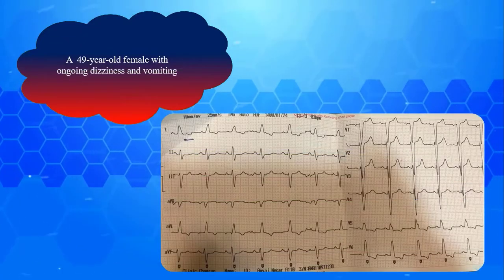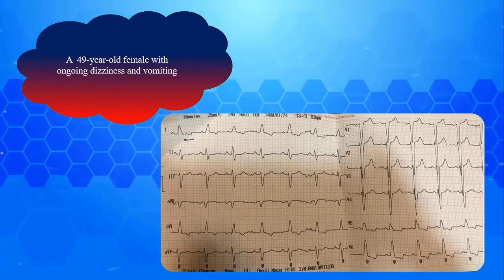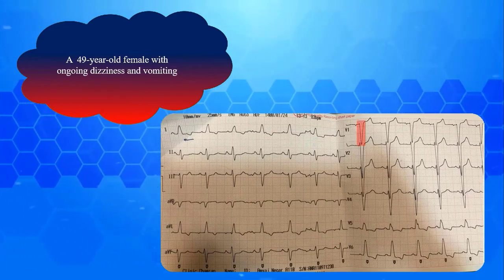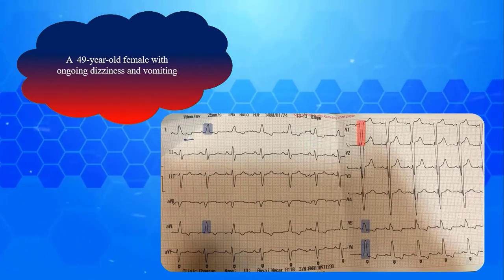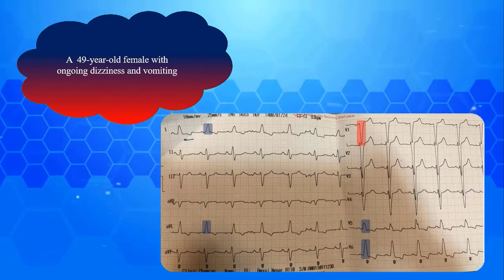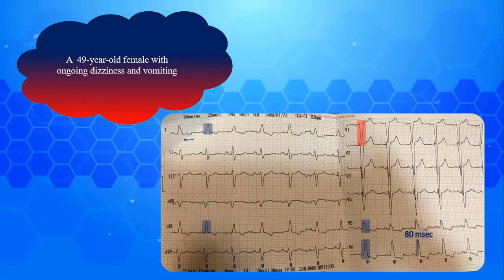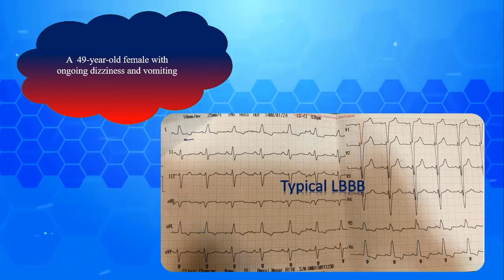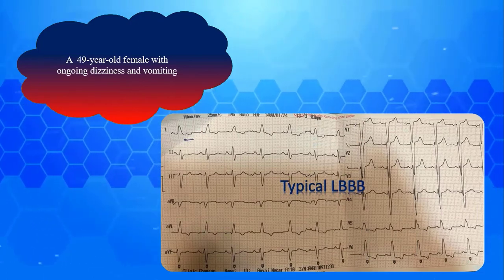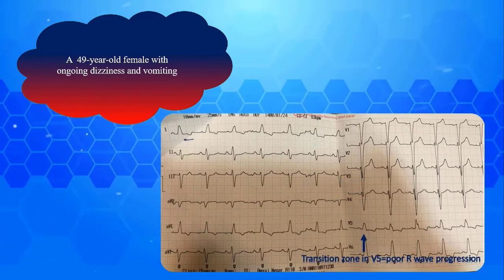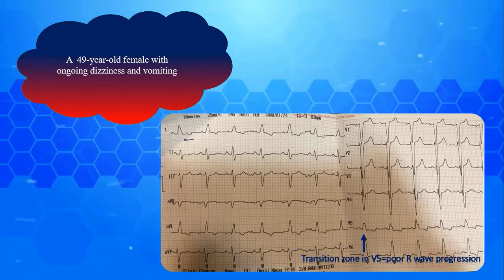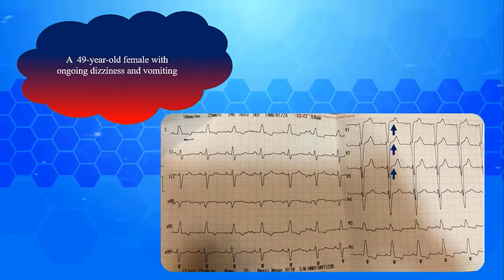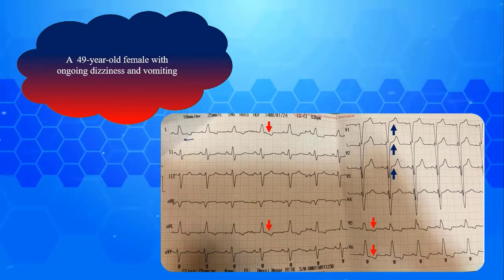The next EKG is obtained from a 49-year-old female with ongoing dizziness and vomiting. Again the QRS complexes are broad with deep S wave in V1 and notched R wave laterally. No septal Q wave is observed in lateral leads. R peak time in lateral leads is obviously prolonged at about 80 milliseconds. Therefore this is a typical LBBB as well. Other associated findings are delayed R wave progression and occasional discordant STT wave changes — ST elevations with upright T waves when deep S wave is present, and ST depression or inverted T wave where slurred R wave is recorded.